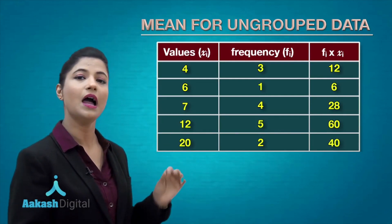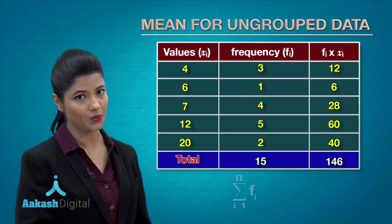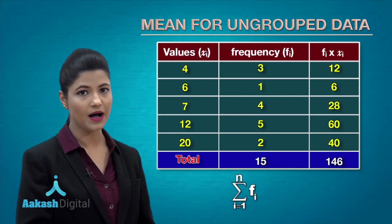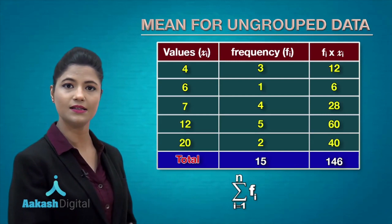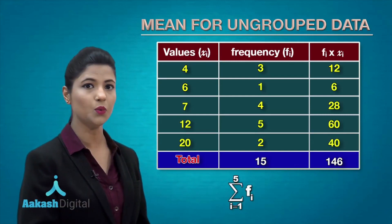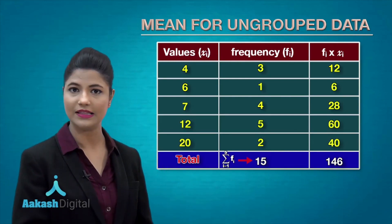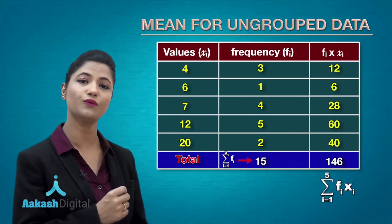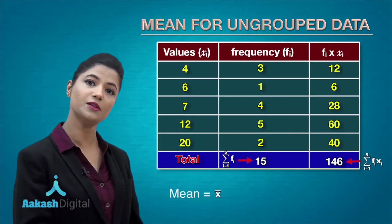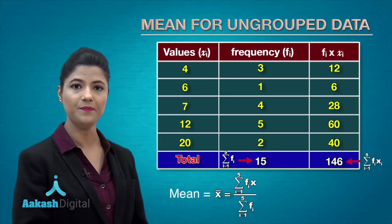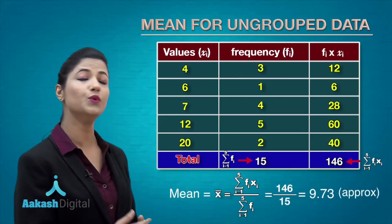After computing fᵢxᵢ for each class, you obtain the sum total of all the frequencies, denoted by the symbol n or Σfᵢ, where i is from 1 to n — in this case we have five classes, so this is Σfᵢ for i = 1 to 5. Then you obtain the sum total of all fᵢxᵢ, denoted by Σfᵢxᵢ for i = 1 to n. Finally, the mean is given by the formula x̄ = Σfᵢxᵢ / Σfᵢ, where i is from 1 to 5.